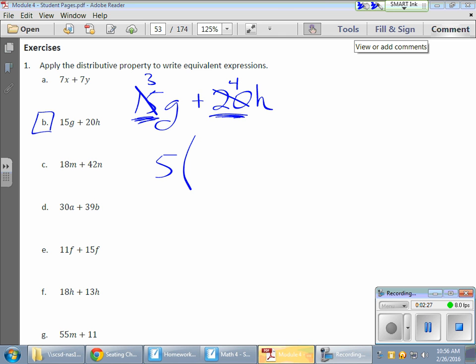So in essence, I'm saying to myself, I need 5 groups of 3 times g or 3 g's, and I need 5 groups of 4 h's. Now if I want to check my work and redistribute that 5 or factor that 5 back in, I can say, hey, if I have 5 groups of 3 g's, that would certainly give me 15 g's. 5 times 3 gives me 15, or 5 times 3 g gives me 15 g, and 5 times 4 h would give me 20 h.